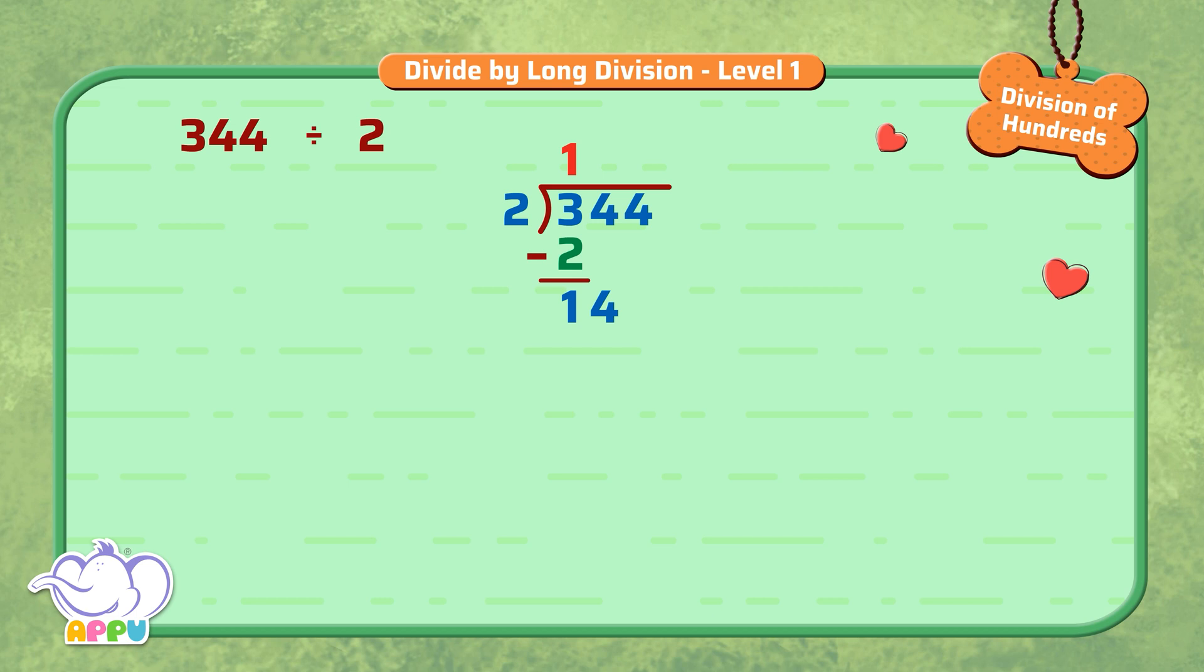We repeat the steps. We divide again. Step 5. We figure out how many 2's does it take to make 14, which is 7.